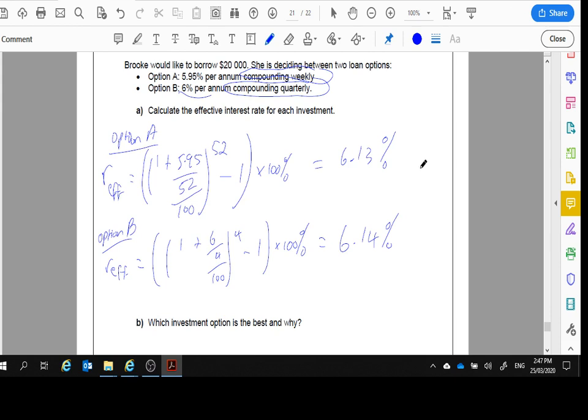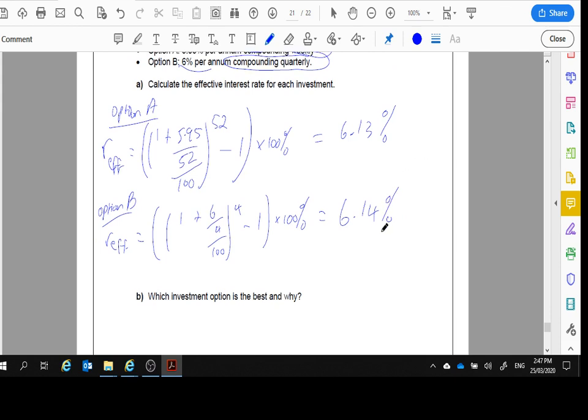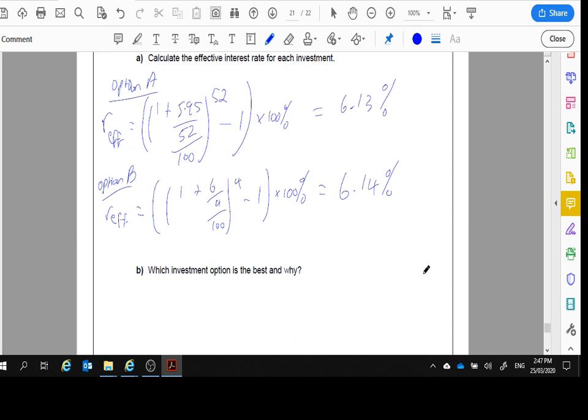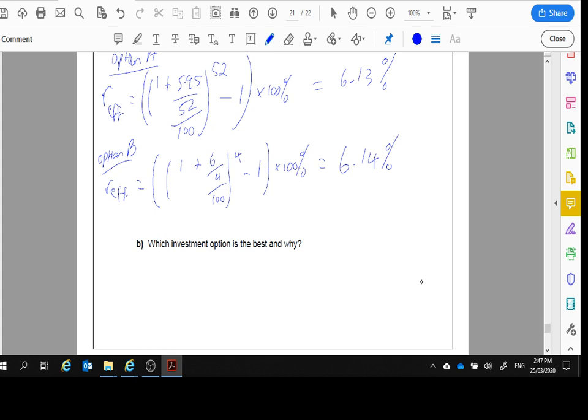So we've got our two effective interest rates. Part B says which investment option is the best and why. Remember, she is borrowing, so she wants the least interest rate possible. The least one is 6.13%, so Option A is the best option because it has a smaller interest rate. Option A is the best option as Brooke will pay less interest since the effective interest rate is lower.